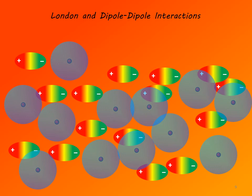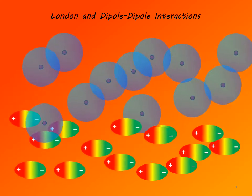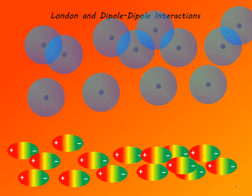In fact, if any of the nonpolar molecules manage to squeeze in among the polar molecules, they will be expelled by the polar molecules, which will tend to reform dipole-dipole interactions. So mixing will very quickly result in separation of two layers — the bottom layer being the more dense molecules that exhibit dipole-dipole interactions, and the less dense layer being those that exhibit only London interactions.